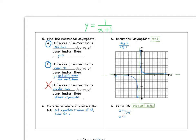Looking at our example, in the cleaned-up version the numerator is a constant — degree 0. The denominator has variable degree 1. So we have a smaller degree over a bigger degree — that's scenario A. Therefore, our horizontal asymptote is simply y = 0.